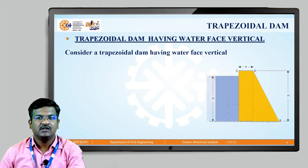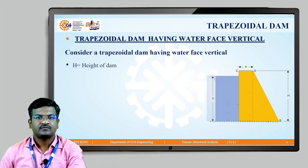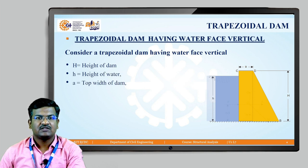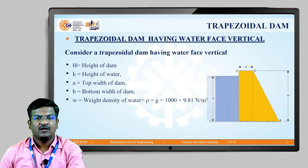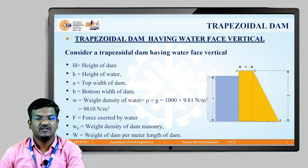In this figure, you can see a trapezoidal dam in which water is stored on the left-hand side and the dam face is vertical on the left-hand side. Capital H is the height of the dam and small h is the height of water. Small a is the top width of the dam and small b is the bottom width. W is the weight density of water (9.81 kN/m³), F is the force due to water on the vertical face, W₀ is the weight density of dam masonry, and W (capital) is the weight of the dam per unit length.